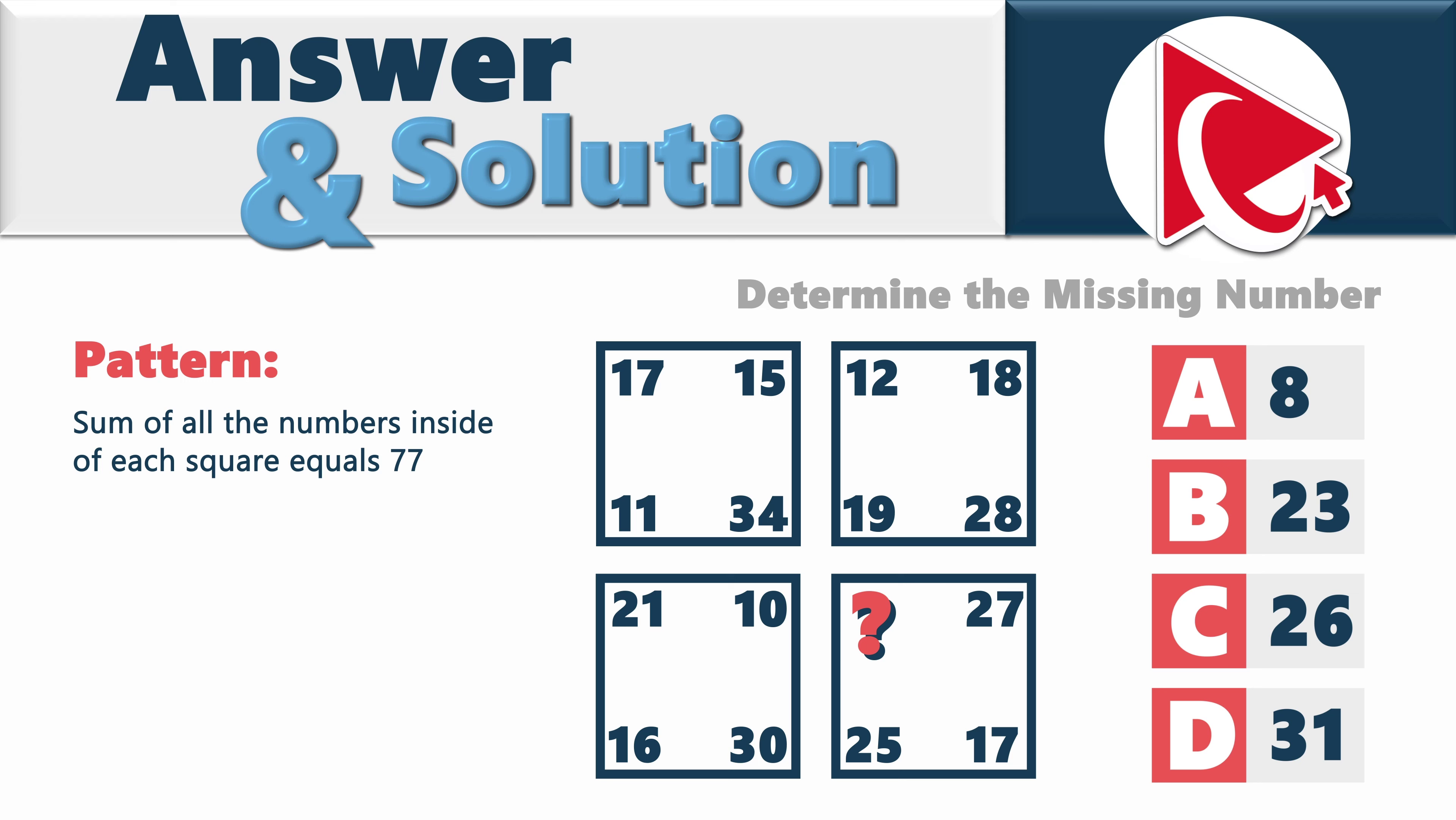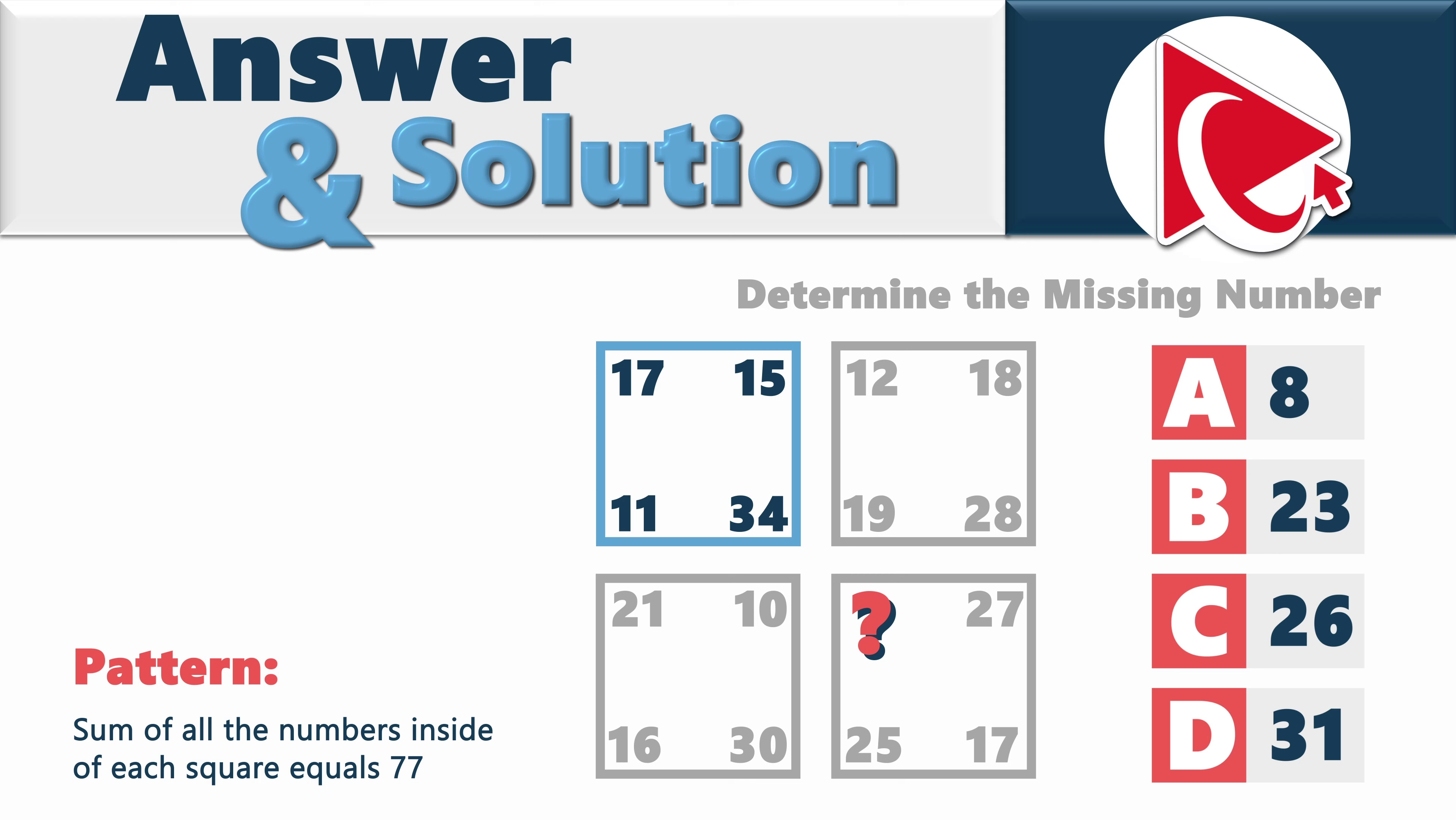The pattern in this question is rather simple. Sum of all the numbers inside of each square equals 77. Let's look at the example. In the first square, if we add up 17, 15, 11, and 34, the end result of this is 77.